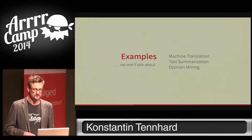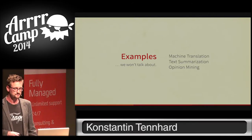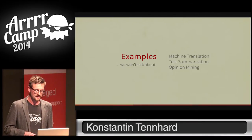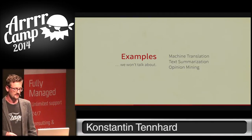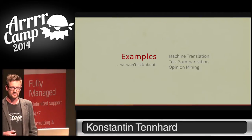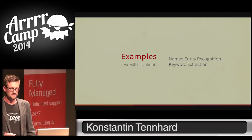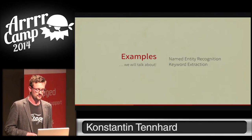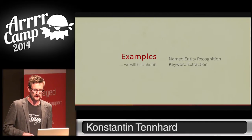There are several applications for natural language processing. Machine translation I already mentioned. A prominent one is also text summarization. And then there is opinion mining, where you try to extract the author's opinion in regard to a certain subject from a given text. These are all examples that are currently actively researched. The two examples I want to talk about today are named entity recognition — extracting references to locations or names of people — and keyword extraction, extracting the most relevant keywords or key phrases from a text.